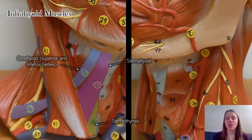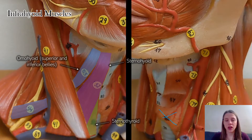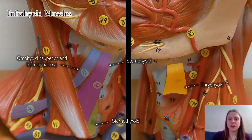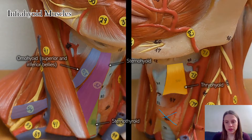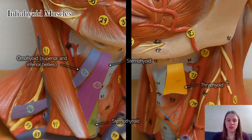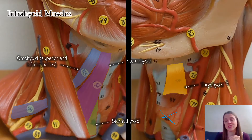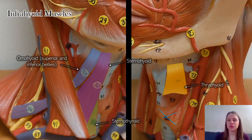Then the sternothyroid — because this little butterfly-shaped structure in the neck is the thyroid gland, the sternothyroid is not directly connected to the hyoid. And then there's the thyrohyoid. The sternothyroid and thyrohyoid are connected to each other, so even though the sternothyroid isn't directly connected to the hyoid bone, it connects to the thyrohyoid which is, making it one of the infrahyoid muscles.